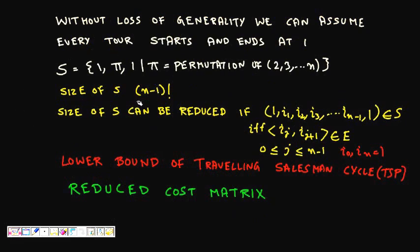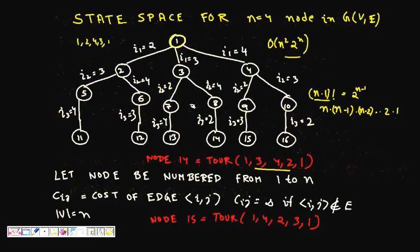In branch and bound, we reduce the search space. We only check valid permutations where each step belongs to an edge. For n=4 nodes, the permutation tree has (n−1)! = 3! = 6 possibilities, representing all possible tours. Instead of searching all branches, branch and bound prunes the tree.